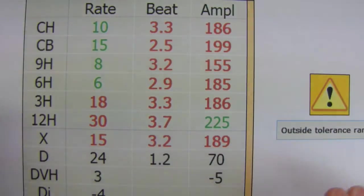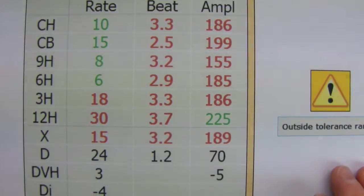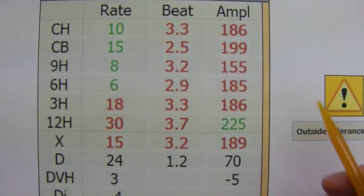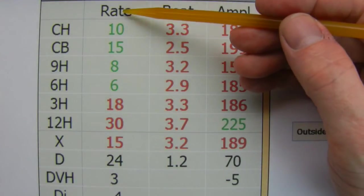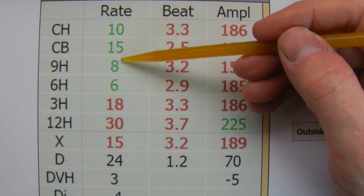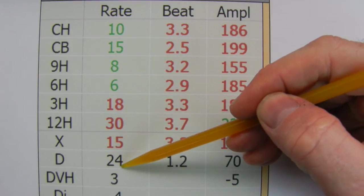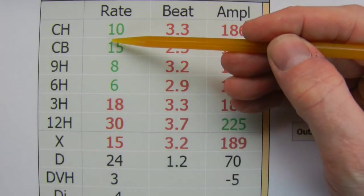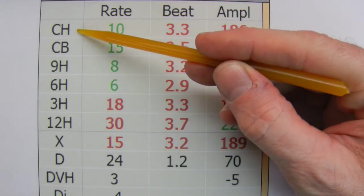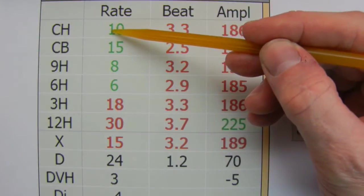But this is the result from that exact watch when it came into the workshop. And what it shows us is this. There's three columns. The first column is the rate in seconds per day. And it's the rate in seconds per day if it was to stay in that position for the full 24 hours.